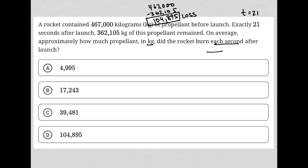So that's my numerator: 104,895 kilograms of propellant were lost over 21 seconds. The division of these two things should get me a kilogram per second loss, which is what we're trying to find. I go back to my calculator and divide 104,895 by 21, and I get 4,995. Therefore, the correct answer is choice A.